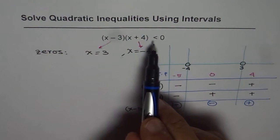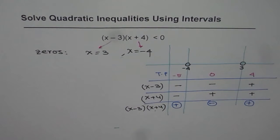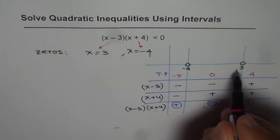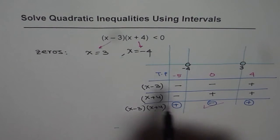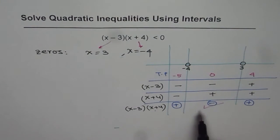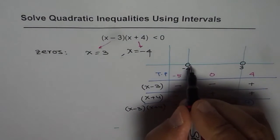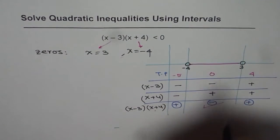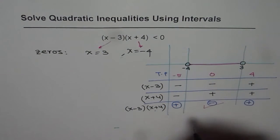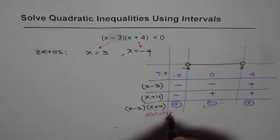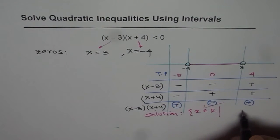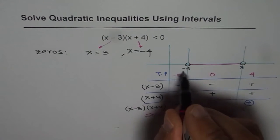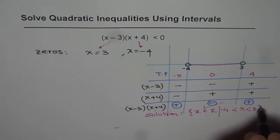What we need really is less than 0. That means negative. So this portion in between minus 4 and 3 becomes our solution set. And we can write down solution as x belongs to real numbers where x is greater than minus 4 and is less than 3.